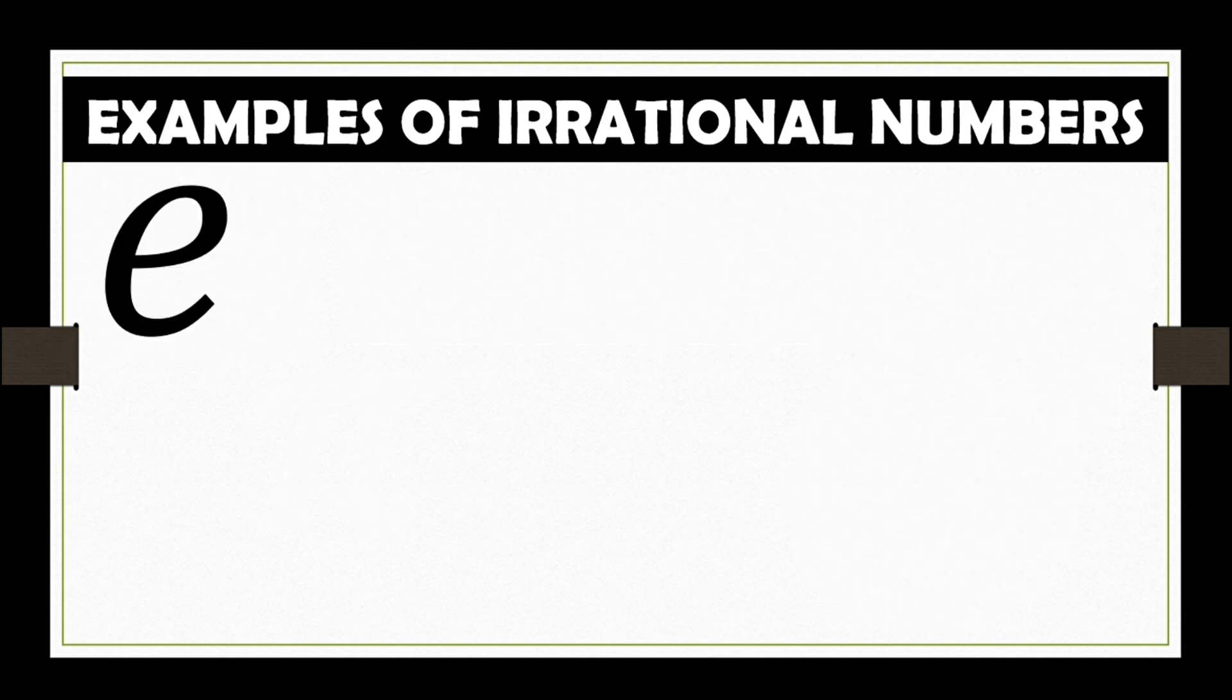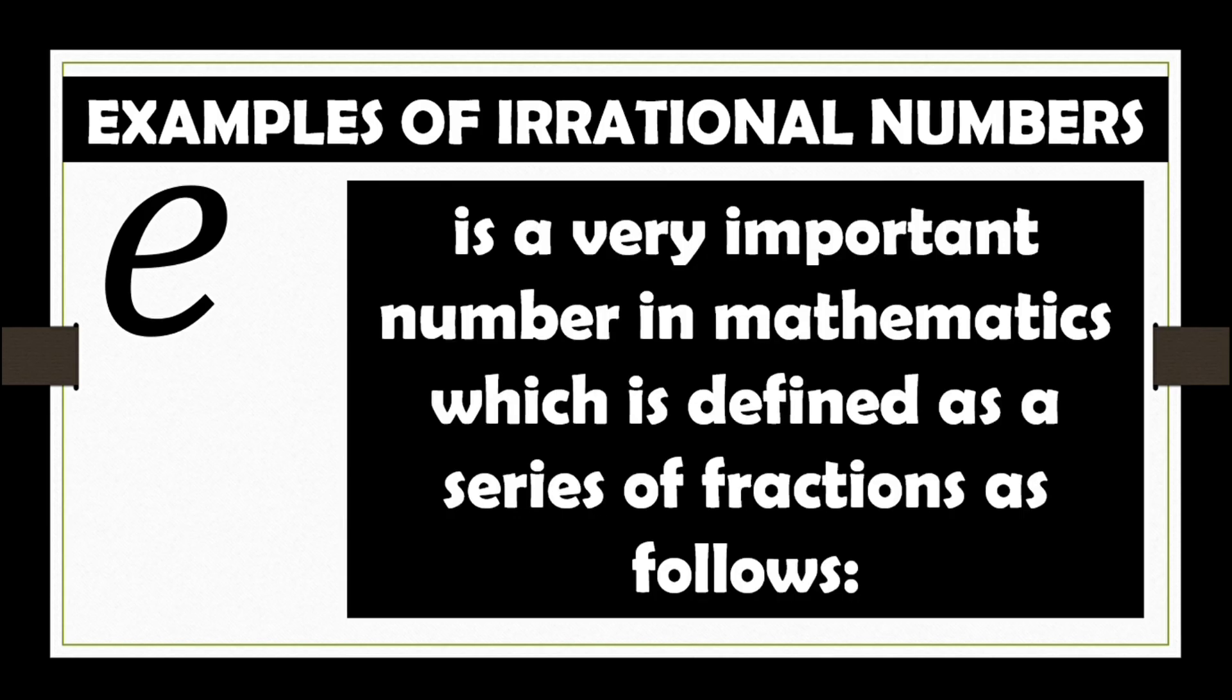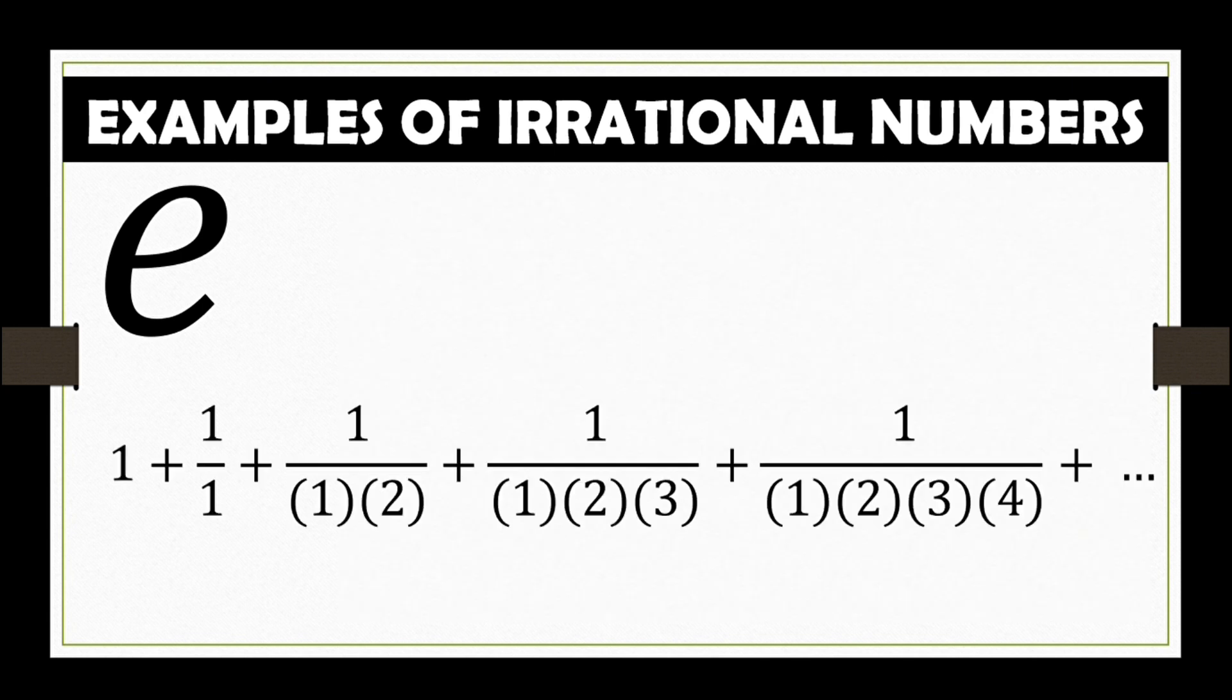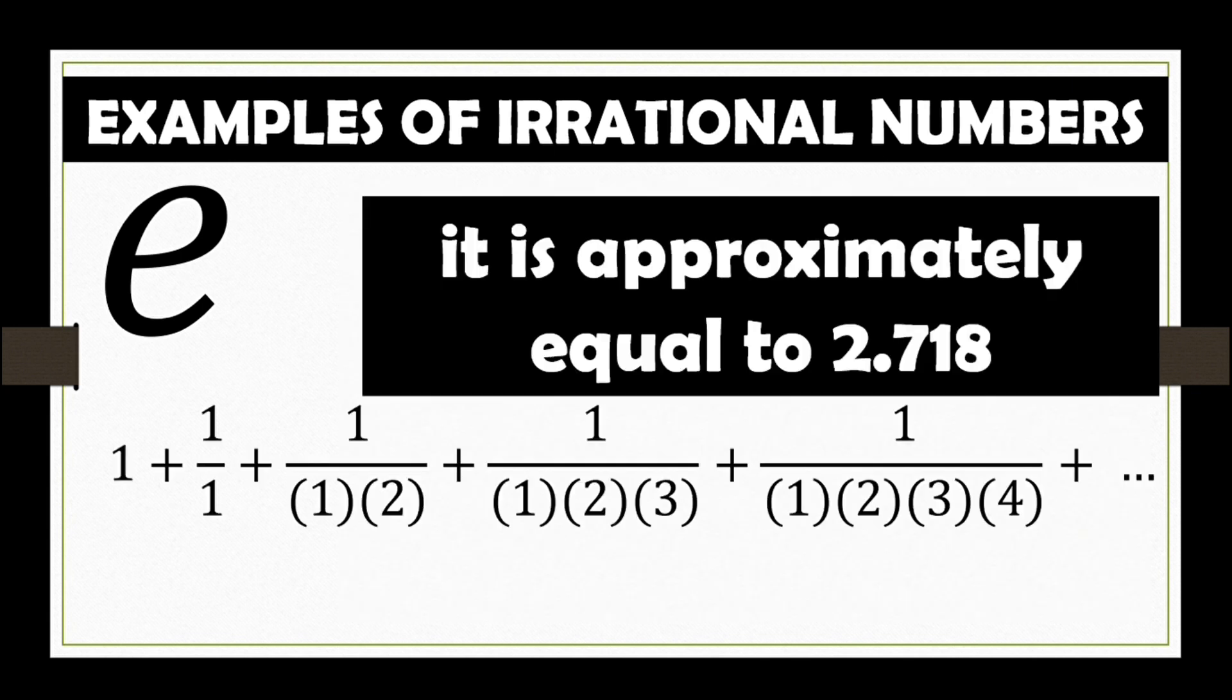The mathematical symbol E or the transcendental number. It is a very important number in mathematics which is defined as a series of fractions as follows. Here E has a value approximately equal to 2.718, which is an irrational number.